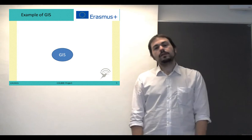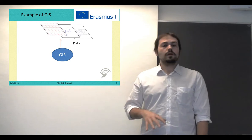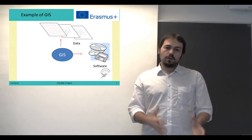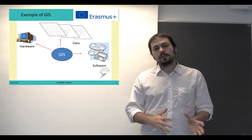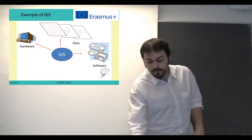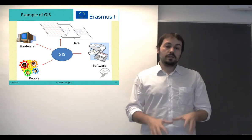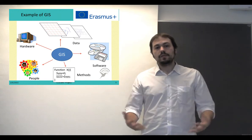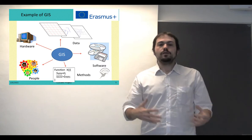Let's see now an example of the parts of GIS. First of all, we have the data, and the data is the most important part of GIS — without the data, we cannot do anything. Then we have the software: all the tools that we use to visualize and process the data. Then we have the hardware: the machines where we run our tools, and also the servers where we store our data. Then we have the people, a very important part of GIS, because we cannot only rely on machines — we need people to interpret what we are seeing in GIS. And finally, we have dedicated functions: scripts that we program in order to perform a concrete operation over GIS.